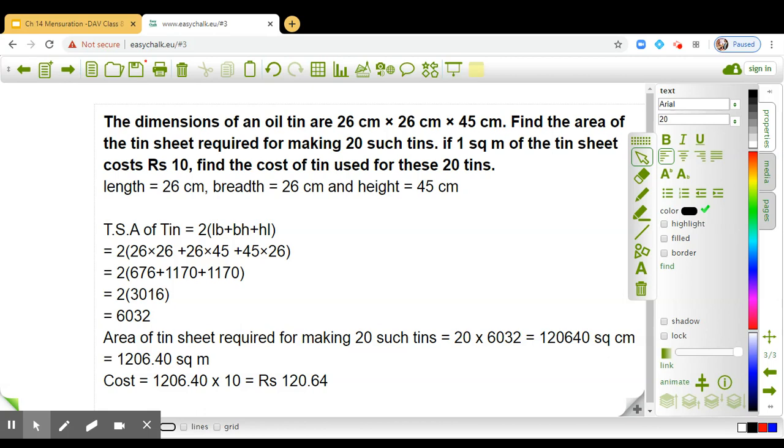Now in this question, it is given that we have to find the cost of the tin used for these 20 tins at the rate of rupees 10 per square meter. We have calculated the area of the tin sheet, which is required for making 20 such tins in square meter. It is 1206.40. So multiply this by 10, you get rupees 120.64. So this is the answer. I hope the question is clear to you.